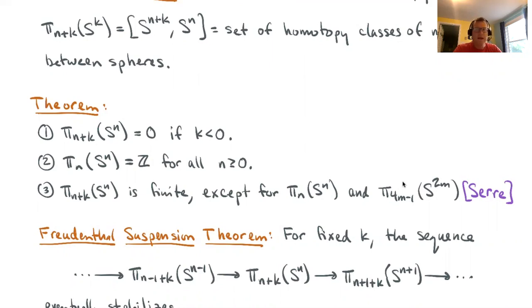The third part of the theorem is much more sophisticated. It says that these unstable homotopy groups are usually finite with some exceptions: π_n(S^n), we already saw that was the integers, and also π_{4m-1}(S^{2m}) is also infinite. That's a famous result due to Serre.